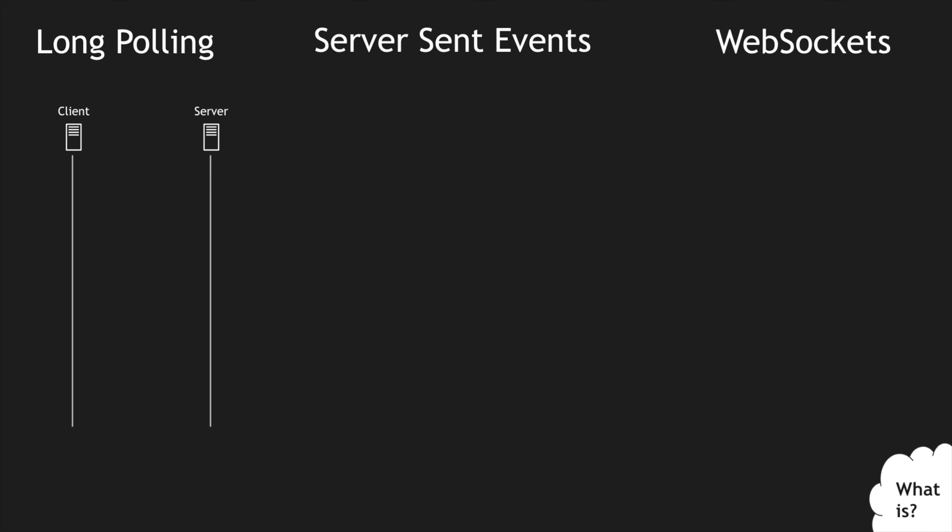The first one is HTTP long polling. Imagine we have a client-server architecture where the client sends a request and waits for the response from the server. The server can be aggregating these requests, or maybe the server is just waiting to respond with a lot of information, or maybe it's just timing out. The server then responds back to the client, and immediately when the client receives the response, the client again initiates a new connection to the server so that it doesn't miss any new information, and the loop continues.